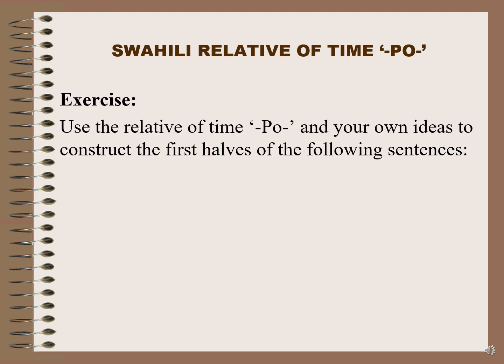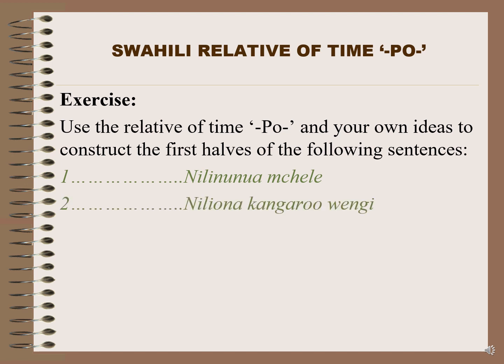Now we have an exercise. Number one: use the relative of time po and your own ideas to construct the first halves of the following sentences. Sentence one: dash dash dash 'nilinunua mchele' — I bought rice. Number two: 'niliona kangaroo wengi' — I saw a lot of kangaroos.